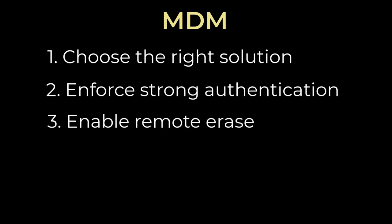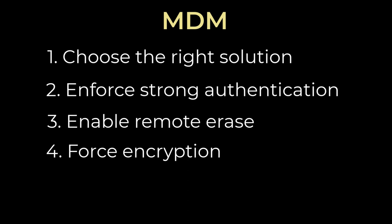Third, enable remote wipe. In the event that a device is lost or stolen, MDM can be used to remotely wipe all data from the device. This ensures that sensitive information does not fall into the wrong hands. Organizations can also use MDM to wipe data from devices that are no longer in use or have been retired. Fourth, use device encryption. MDM can be used to enforce device encryption. Encryption ensures that data stored on the device is secure and cannot be accessed by unauthorized users. If a device is lost or stolen, encryption helps ensure that the data cannot be accessed without the encryption key.